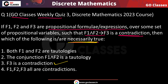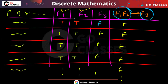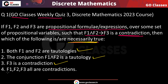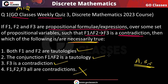So necessarily: f3 is a contradiction — correct; f1 and f2 are both tautologies — correct; and the conjunction f1 ∧ f2 is also a tautology — correct, since both are tautologies. The option that f1, f2, f3 are all contradictions is not correct. This is an MSQ question and the answer is options A, B, and C.